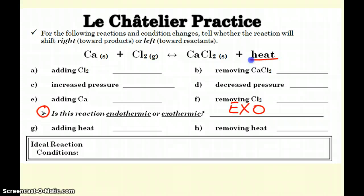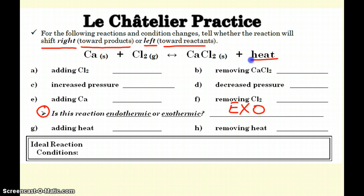What we can do to a reaction at equilibrium is stress it — change it in two different ways. We can either add something to the reaction or we can remove it. If we add something, it's going to shift away from the addition. If we remove something, it's going to shift towards the removal. We're looking for whether the reaction shifts to the right towards products, or shifts to the left towards reactants.